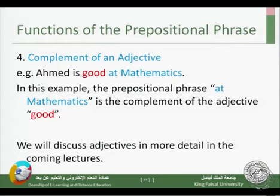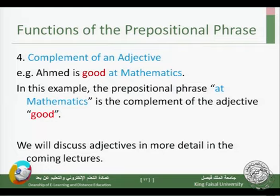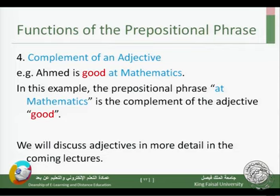The fourth and final function of the prepositional phrase is the complement of an adjective. A complement is something necessary for the completion of meaning. For example: 'Ahmed is good at mathematics.' Here 'Ahmed' is the subject, 'is' is the verb, and 'good' is an adjective. 'At mathematics' is a prepositional phrase that completes the meaning of 'good' — when we say 'Ahmed is good,' we wonder what he is good at. So 'at mathematics' is the complement of the adjective 'good.'